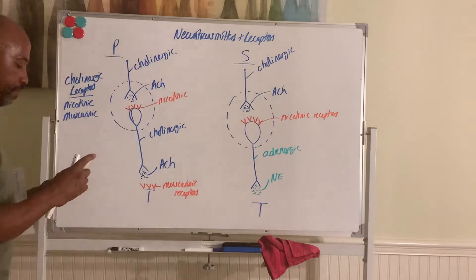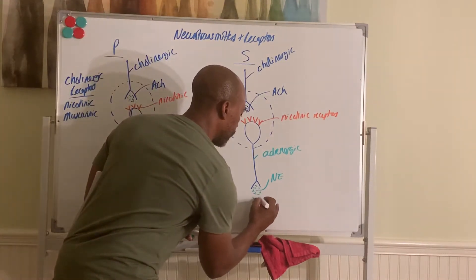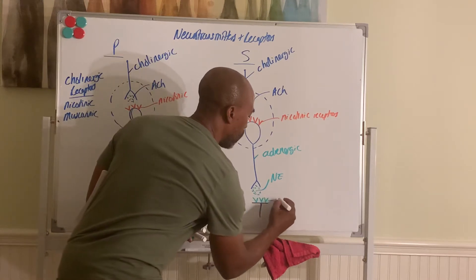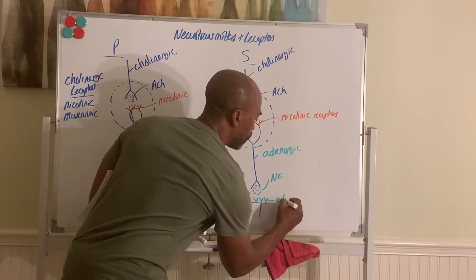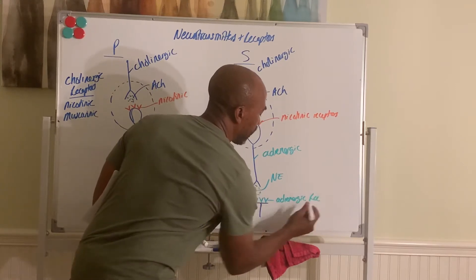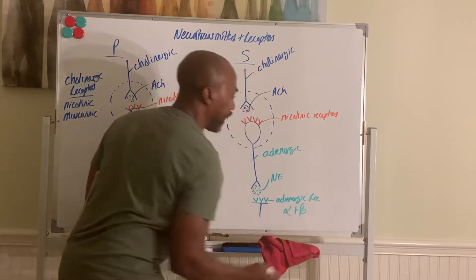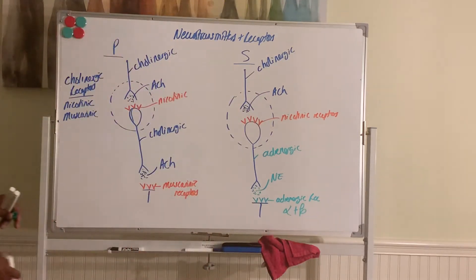And for norepinephrine, the receptors that respond to it are called adrenergic receptors. Specifically, you have two main classes of them, alpha and beta adrenergic receptors.